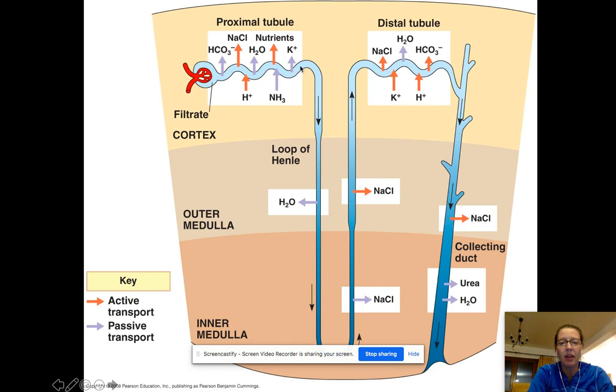And then it drops down into something called the loop of Henle, which is going to be used for water and salt balance. And then we're going to get this distal convoluted tubule, and then finally the collecting duct. So here, the Bowman's capsule and the glomerulus, that part is for filtration.